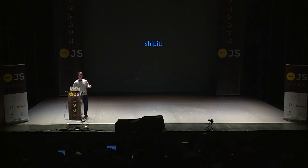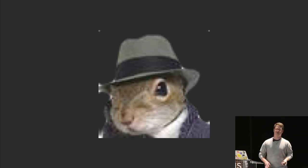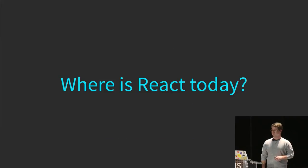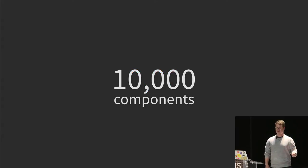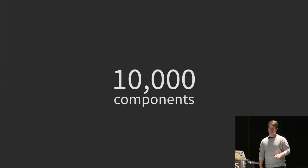We shipped it first in ads, then to the average user in newsfeed, more and more across the Facebook website, and then we open sourced it. At Facebook, we have nearly 10,000 components — we use it every day, from user-facing code to internal tools to random little scripts. We also use it for a piece of the mobile website and our open source projects as well.